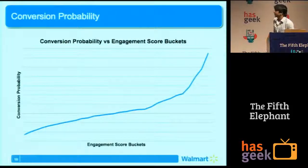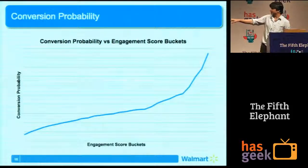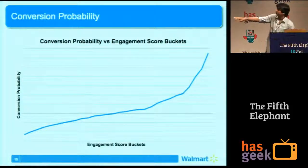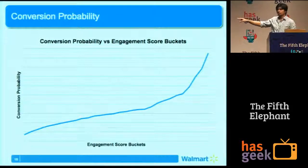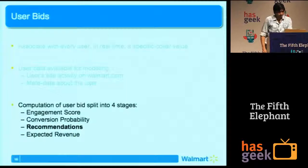This is a graph between the conversion probability and the engagement scores. As you can see, as the user browses more and more on Walmart.com, he becomes more and more likely to convert for us.